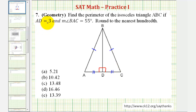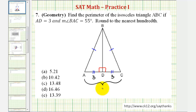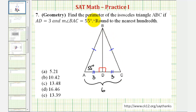The length of AD is equal to the length of CD, and we're told the length of AD is three units. So if AD equals three units, then CD also equals three units, and therefore the length of side AC is equal to six units. Using right triangle trigonometry, we can find the length of side AB, which will also give us the length of CB. Once we have the length of all three sides, we can find the sum to get the perimeter.